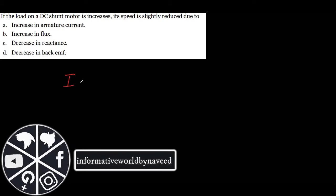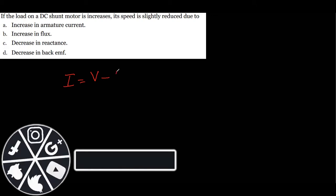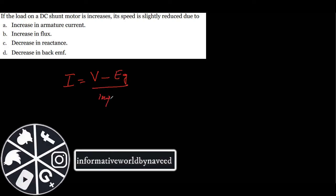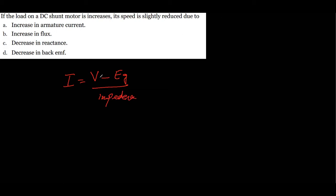The next MCQ: if the load on a DC shunt motor is increased, its speed is slightly reduced due to an increase in armature current, increase in flux, decrease in reactance, or decrease in back EMF. If the load is increased, the current increases, and since applied voltage is constant, the current increases by decreasing the back EMF. The correct option is D — decrease in back EMF.